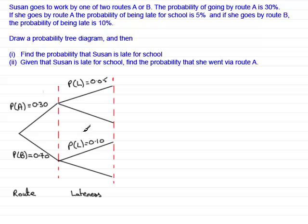P(L) is 0.05. No, it's not. It's 0.10. This is not good enough for this type of question. So what have we got to do? Well, the probabilities of being late are dependent on the route that she takes. So we should be writing the probability of being late given that she took route A.